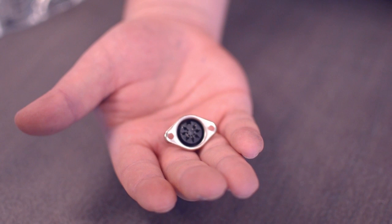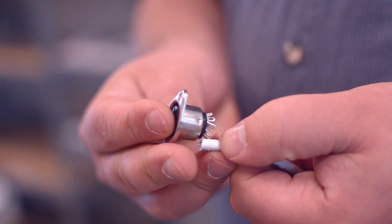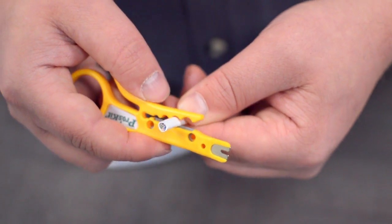Measure how far you will need to strip back the jacket by holding the cable up against the base of the connector. Then strip the cable jacket using the wire strippers.